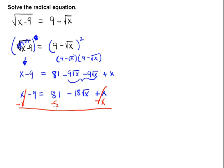While we're at it, we can subtract 81 from both sides of the equation. This gives us a negative 90 on the left side of the equation is equal to a negative 18 square root of x.